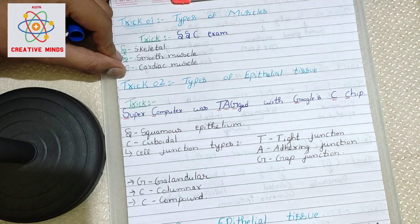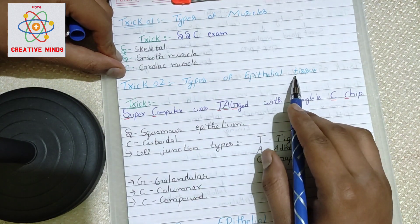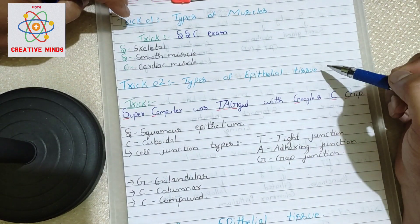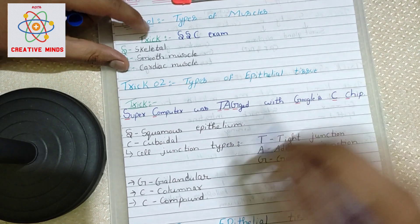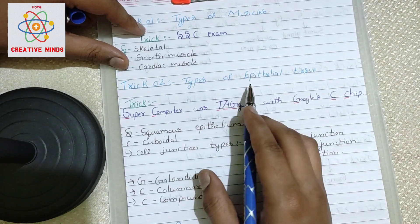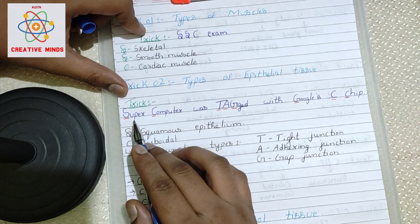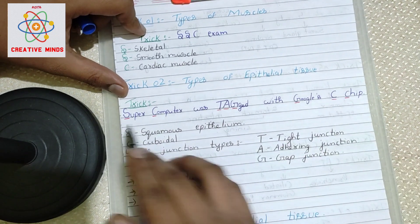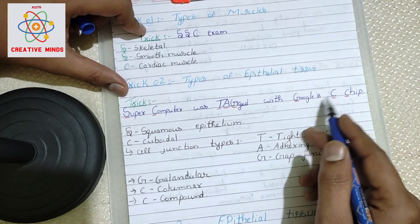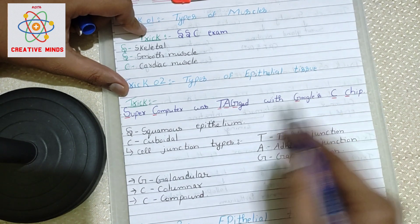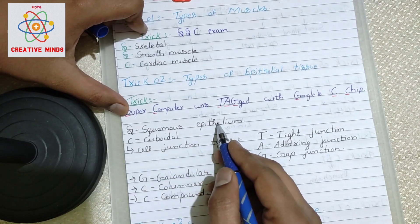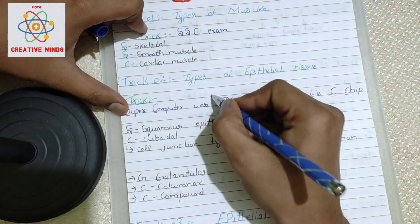Trick number two is for types of epithelial tissues. We have lots of types and categories of epithelial tissues — squamous epithelium, cuboidal, etc. The trick is: 'Supercomputer was tagged with Google's C chip.' From S we have squamous epithelium, C is cuboidal epithelium.